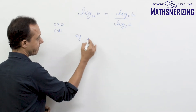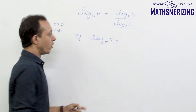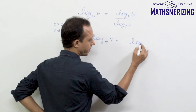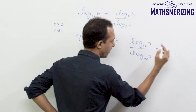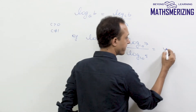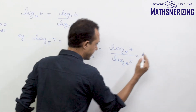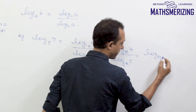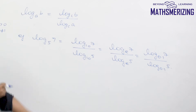For example, if we have log 7 base 5 and we want to change it to base 10, we can write it as log 7 base 10 upon log 5 base 10. If someone wants to change it to base E, they can write it as log 7 base E upon log 5 base E. We can also use 0.1 as the base, writing it as log 7 to the base 0.1 upon log 5 to the base 0.1.